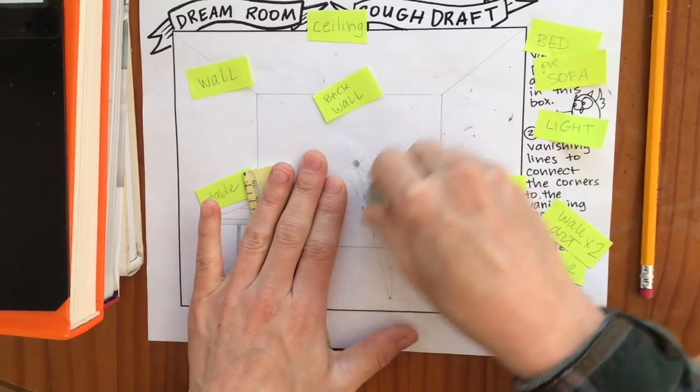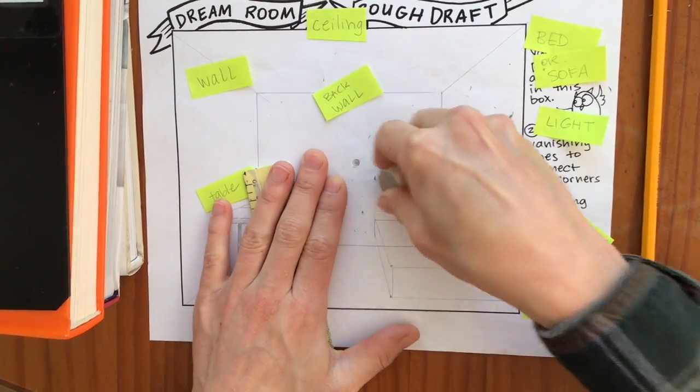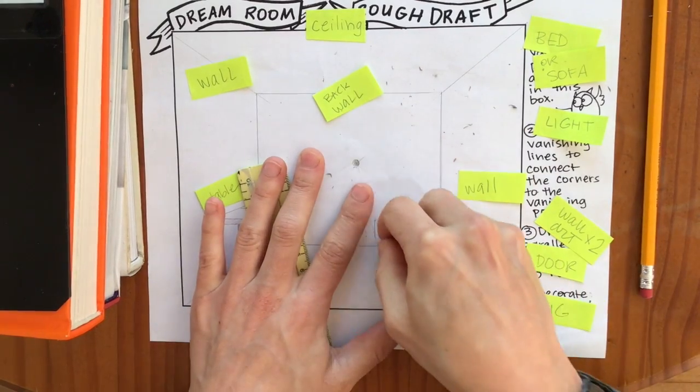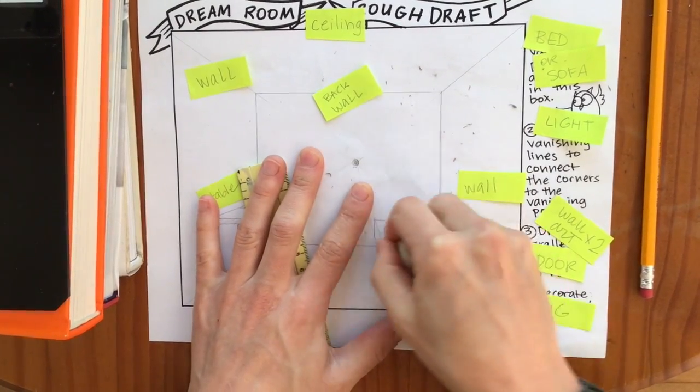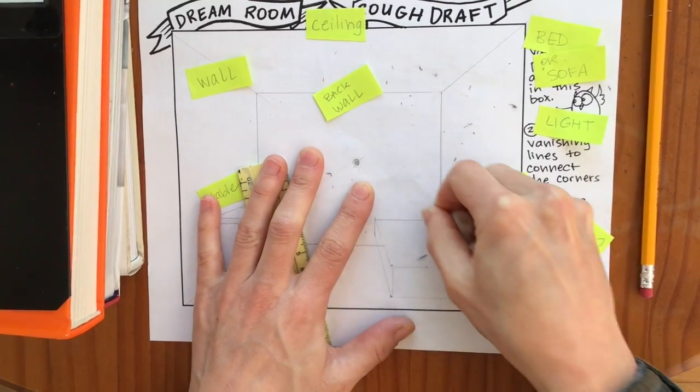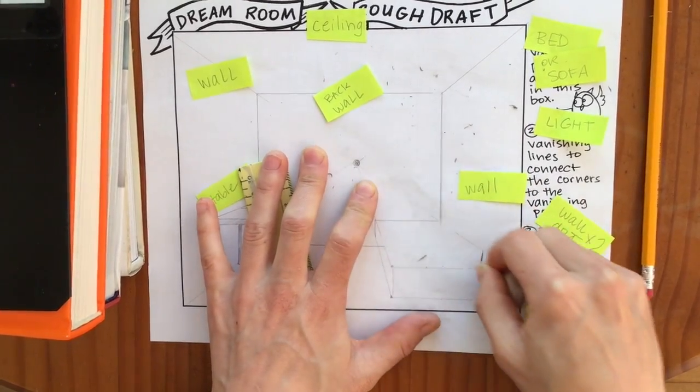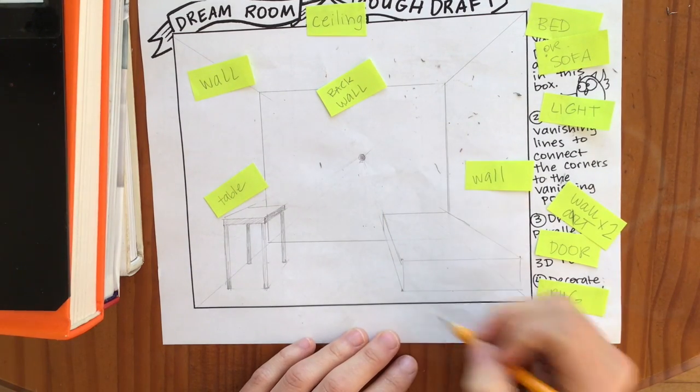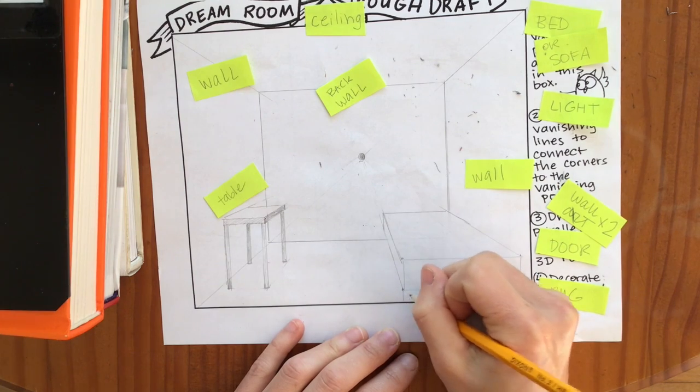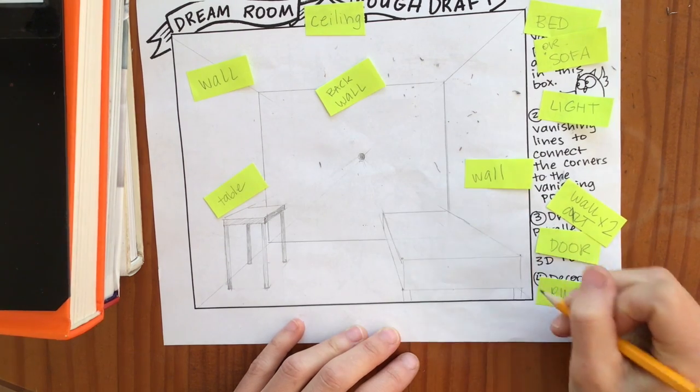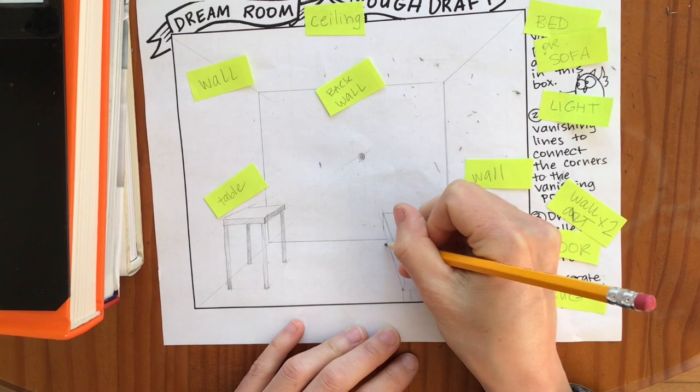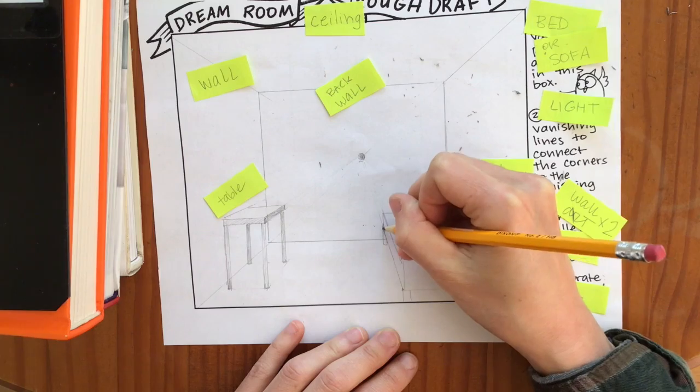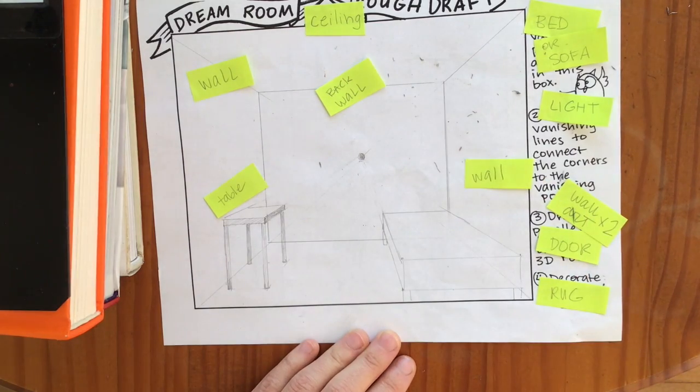Now just like I did from my table, I'm going to erase the vanishing lines I don't need anymore. And to make it easy on myself, I'm also going to erase all of the lines on the inside here that I'm not going to be able to see anymore because the bed is in the way. There is my bed. Now my bed is not floating. So I want to make sure that I'm giving it some little legs here and here. There's also going to be legs that connect it down here to the floor that we're going to be able to see. Cool. There is my bed.